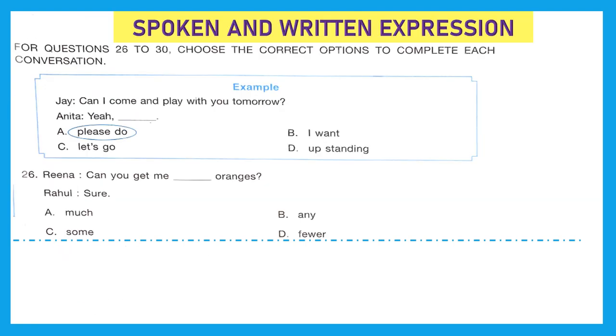Moving to our next section, spoken and written expression. For questions 26 to 30, choose the correct options to complete each conversation. Question 26, Reena: Can you get me dash oranges? Rahul: Sure. What will come? Is it much, any, some, or fewer? The right answer is option C, some. Can you get me some oranges?